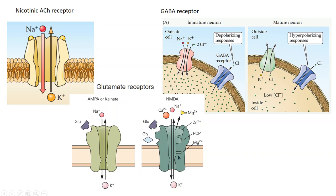One interesting factor is that for glutamate to open the NMDA channel, it also requires glycine to be bound to the receptor. Normally the concentration of extracellular glycine is enough to activate or open the channel. In addition to glycine, this particular channel is also controlled by magnesium ions — the pore of this channel is controlled by magnesium ions at a magnesium binding site.